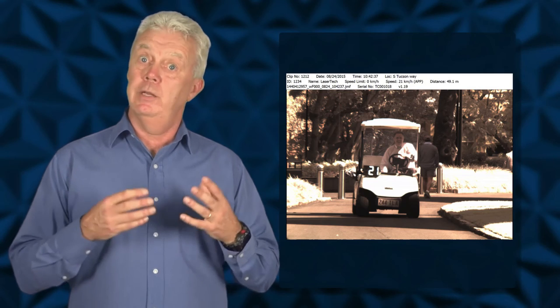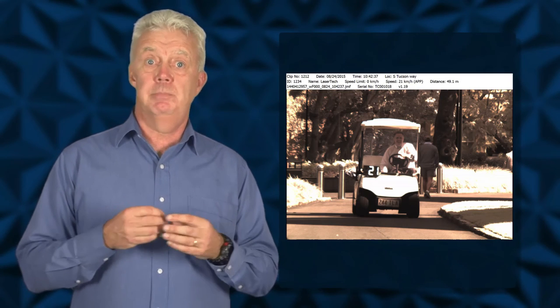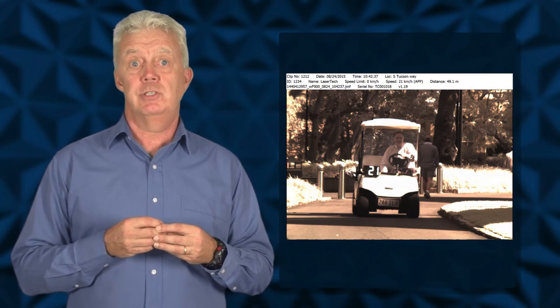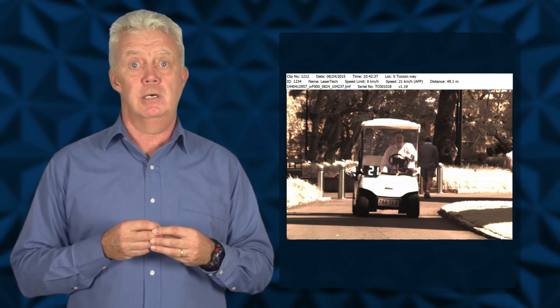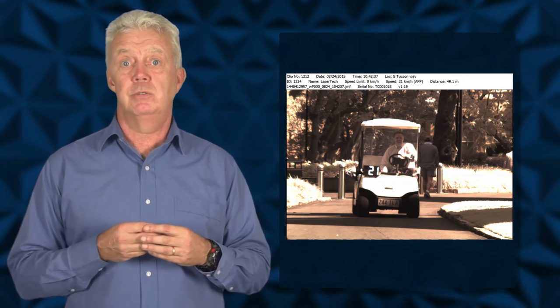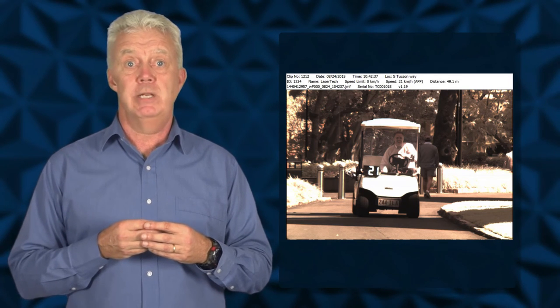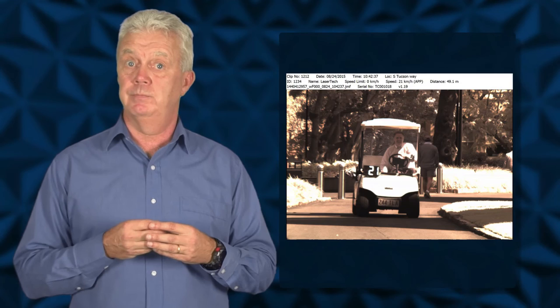The most common way this is measured is by a speedometer in a car. Additionally, the police service make use of a device known as a LIDAR to record the speed of vehicles and provide evidence in cases of speeding. In this module, we will be using data from the Queensland Police to further our understanding of the validity of evidence.